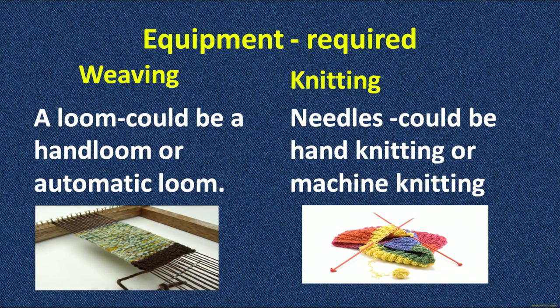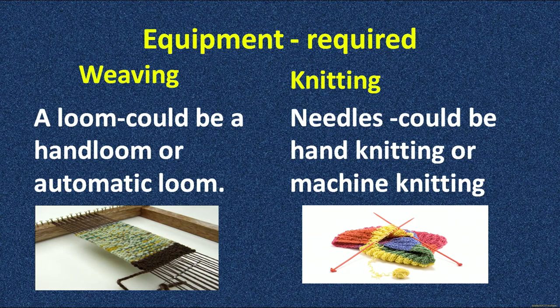Another property to compare is what equipment is used. For weaving, a loom — either a hand loom or an automatic loom — is used. As you can see in the picture, the loom is an apparatus in which warp yarns are tied up on one side and weft yarn goes crosswise to form the sequence. For knitting, only needles are required — needles used either for hand knitting or for machine knitting.